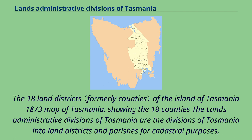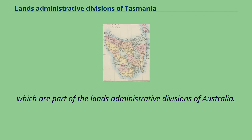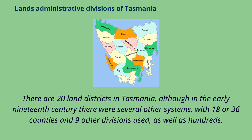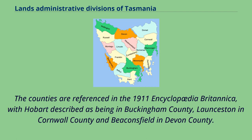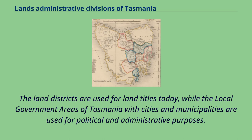The 18 land districts of the island of Tasmania: an 1873 map of Tasmania shows the 18 counties. The lands administrative divisions of Tasmania are the divisions into land districts and parishes for cadastral purposes, which are part of the lands administrative divisions of Australia. There are 20 land districts in Tasmania, although in the early 19th century there were several other systems with 18 or 36 counties and nine other divisions, as well as hundreds. The land districts include the 18 former counties of the island of Tasmania, which were renamed but retain the same boundaries, plus King Island and Flinders Island. The counties are referenced in the 1911 Encyclopedia Britannica, with Hobart described as being in Buckingham County, Launceston in Cornwall County, and Beaconsfield in Devon County.